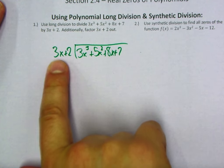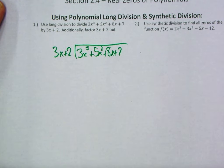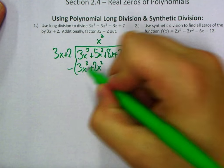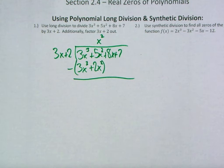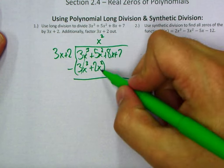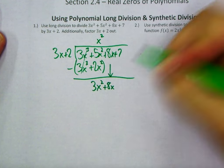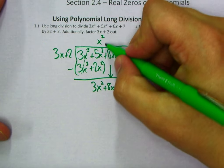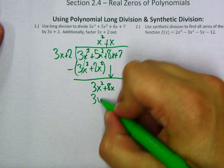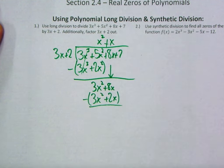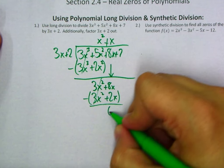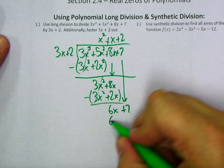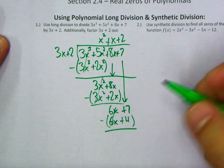First, 3x times what is going to be 3x cubed? It's going to be x squared. x squared times 3x is 3x cubed, and x squared times 2 gives us 2x squared. We subtract that off following our traditional left-to-right division algorithm. 5x squared minus 2x squared is 3x squared, and now we can bring down the 8x. 3x times what is 3x squared? We need x. We get 3x squared plus 2x, subtract that off. 8x minus 2x is 6x. Bring down the constant. 3x times what is 6x? That's positive 2. We multiply out and get 6x plus 4. Subtract it — those are gone — and we get a positive 3.